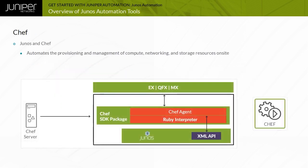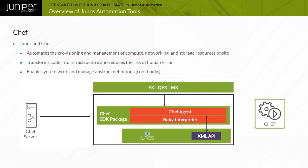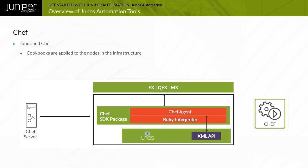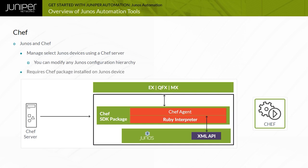Chef automates the provisioning and management of compute, networking, and storage resources on-site or in the cloud. Chef transforms code into infrastructure, enabling you to configure, deploy, and scale infrastructure in real-time and reduce the risk of human error. Chef enables you to write abstract definitions of your infrastructure in Ruby and manage the definitions like source code. These abstract definitions, called cookbooks, are applied to nodes in your infrastructure by the Chef clients running on those nodes. Chef is supported on selected Junos devices using a Chef client installed on the Junos device.